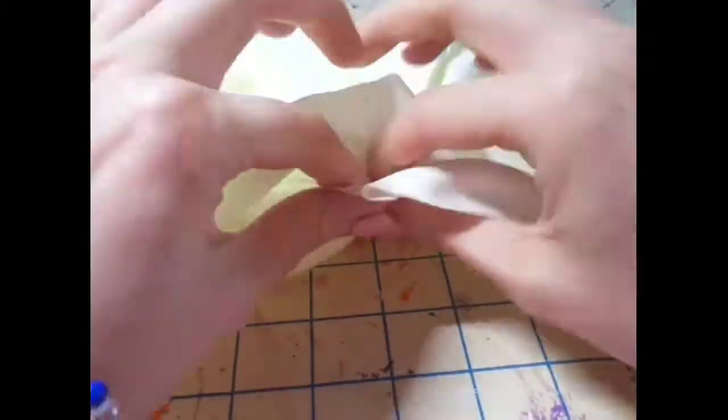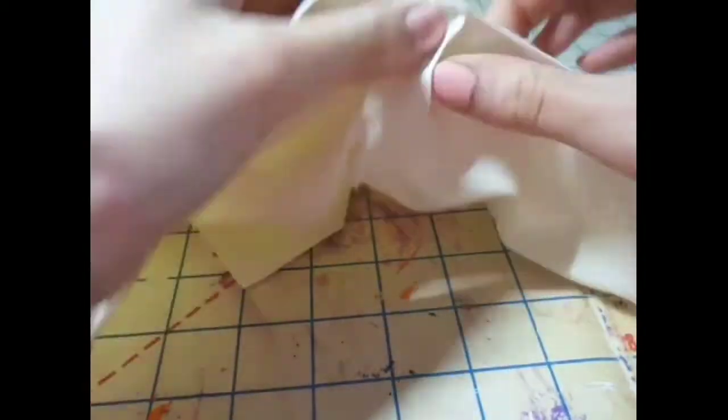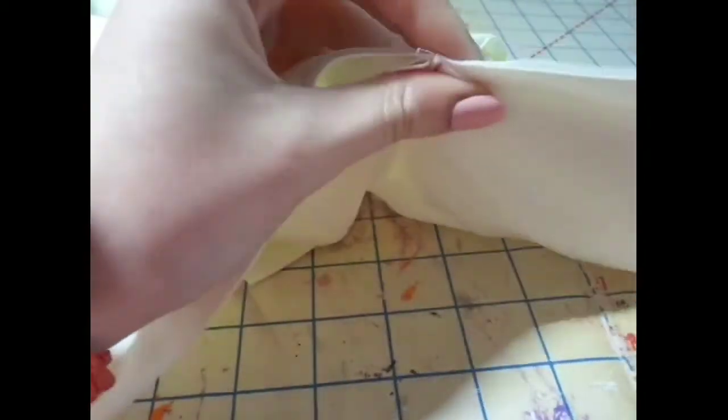Here I'm starting from the armpit seam, pinning that together, and then working my way down the sleeves and sides and then sewing that seam.